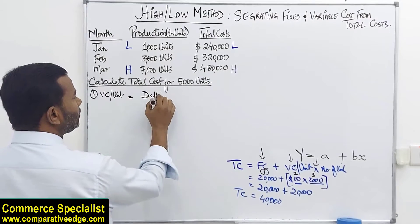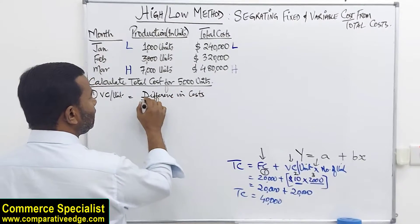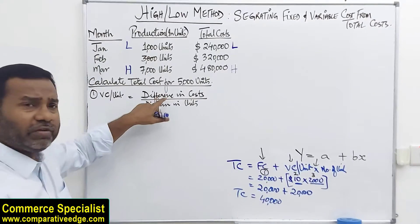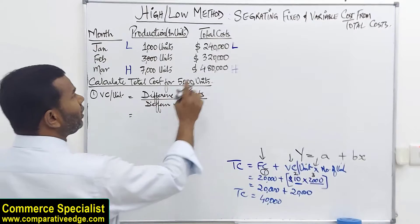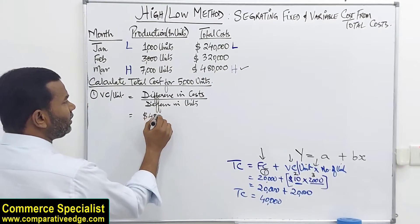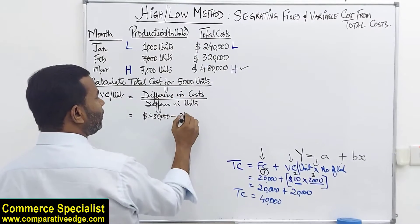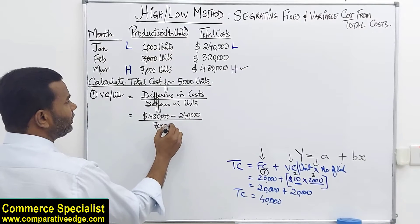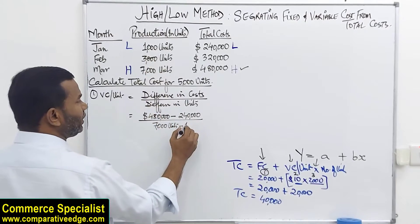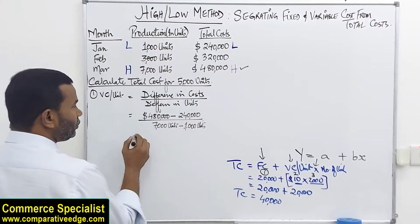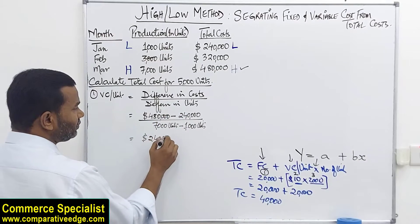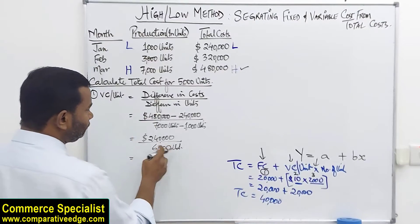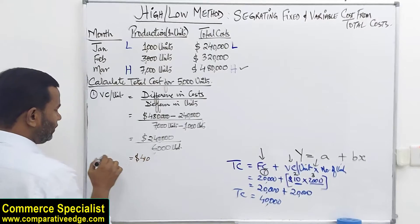It is difference in cost divided by difference in units. When I talk about difference, I am talking about the high and low. Difference in cost: the highest cost is $480,000. I will write that in the numerator. $480,000 minus the lowest cost which is $240,000. Divide by in the denominator, I have the difference in units. The highest is 7,000, always write the highest first. 7,000 units minus the lowest unit is 1,000. So 480 minus 240 is 240,000, and 7 minus 1 is 6,000 units. So when you divide, you get $40. This is your variable cost per unit.